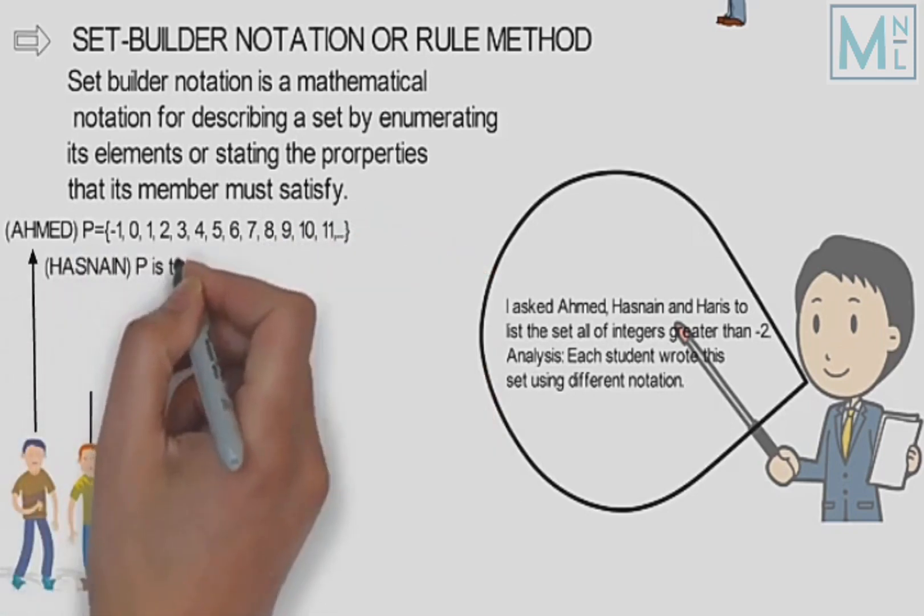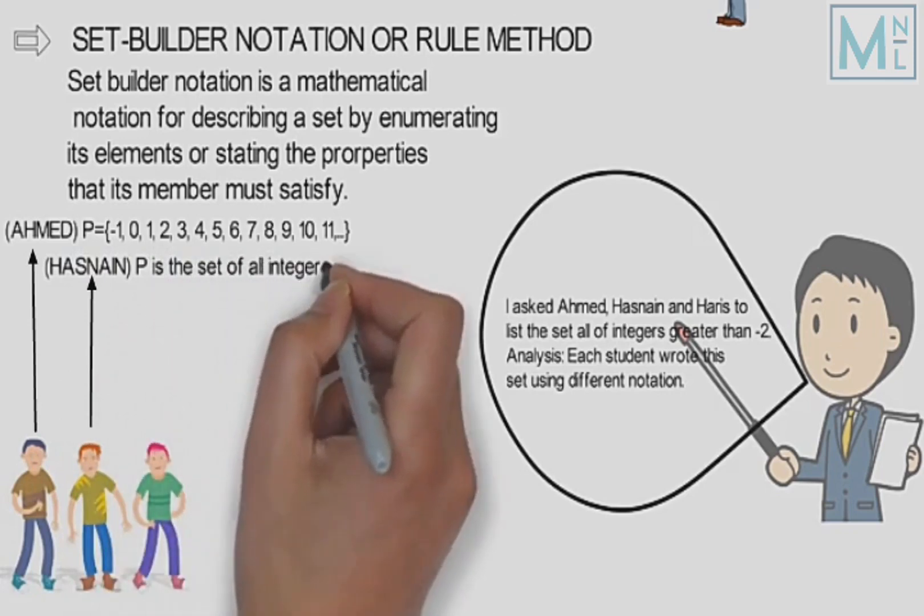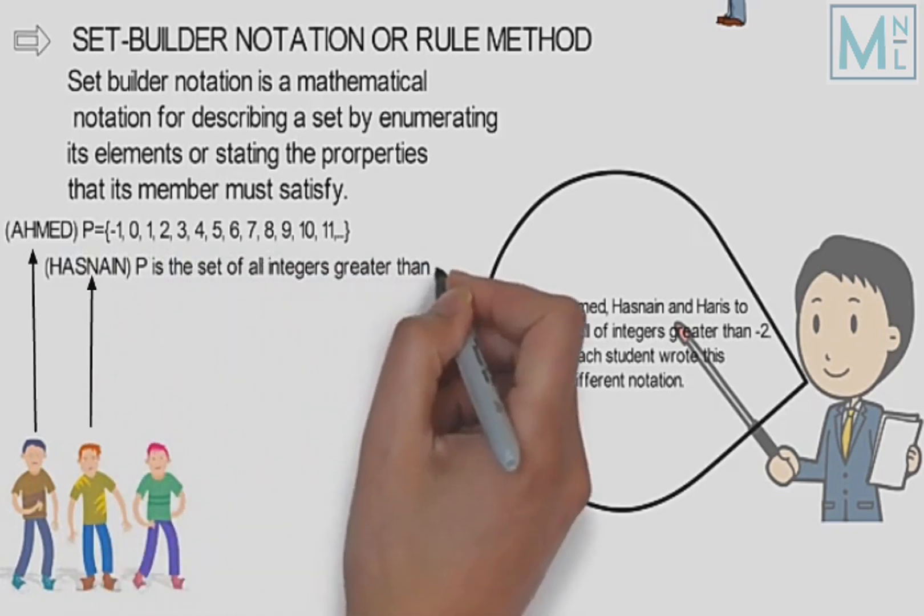Hasanen ne set banaya: P is the set of all integers greater than minus two, jo ke descriptive form kailata hai.